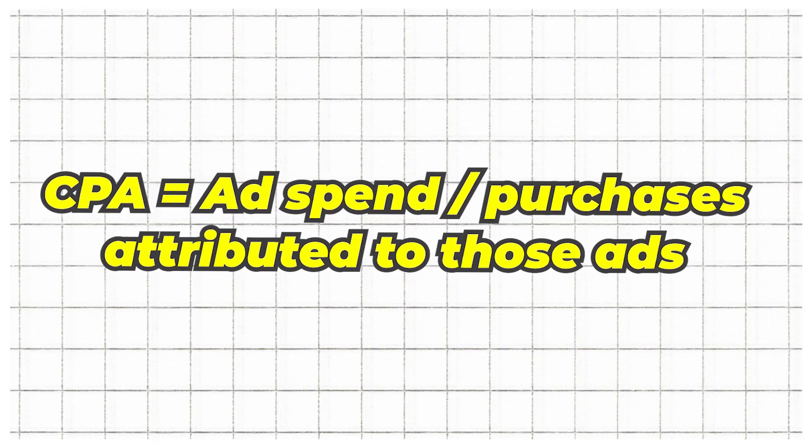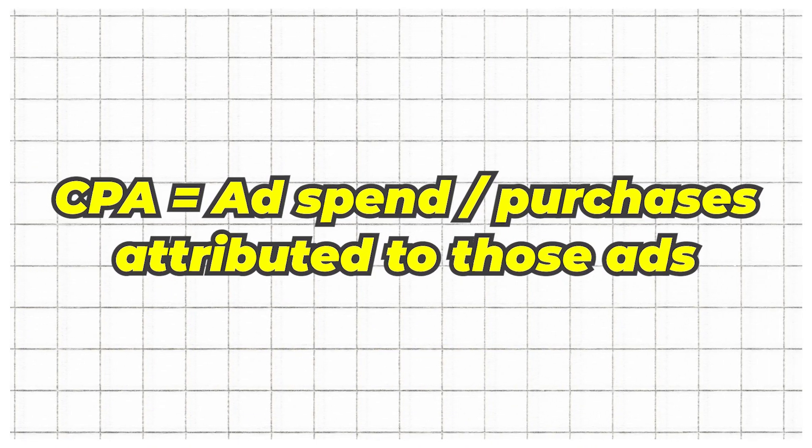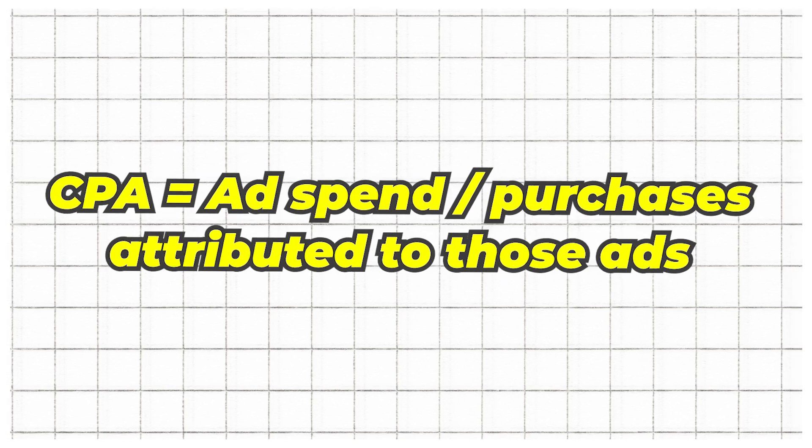To do this, we'll focus on two metrics: CPA or cost per acquisition, and ROAS, return on ad spend. So CPA is your ad spend divided by the purchases attributed to those ads. For example, if we have $100 of ad spend and we got four purchases, that would be a $25 CPA.